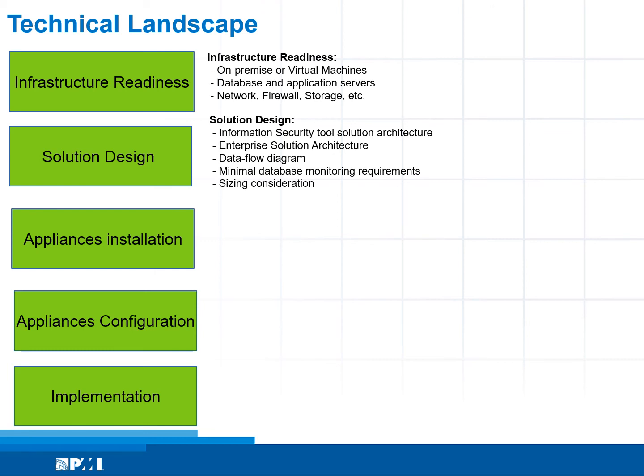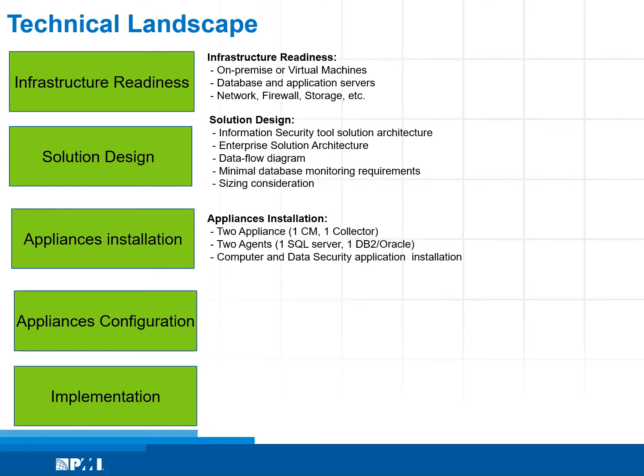For appliance installation, at least two appliances are needed: one for the central manager and one for the collector, plus two agents. For example, it could be one SQL server, one database server, or an Oracle server — or Sybase, depending on the organization. We also want to make sure the computer and data security application or tool is installed.